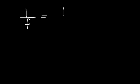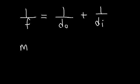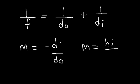In this video, we're going to go over a two-lens system — a system with a convergent lens and a divergent lens. The equation that we need is the thin lens equation, where F is the focal length, DO is the distance between the object and the center of the lens, and DI is the distance between the image and the center of the lens. Magnification is equal to negative DI over DO, and it's also the ratio between the height of the image and the height of the object.